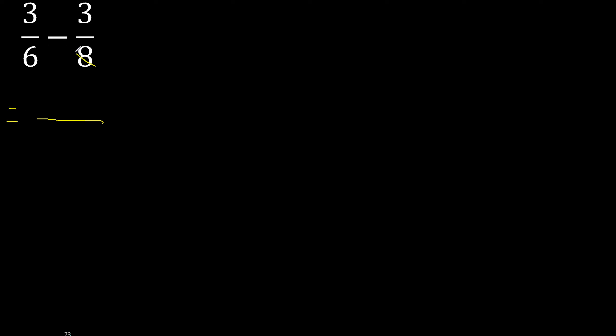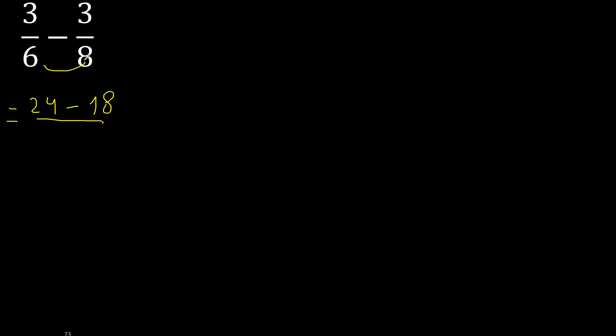First, multiply like this: 8 x 3 = 24, minus 6 x 3 = 18. Here, 6 x 8 = 48.